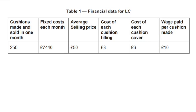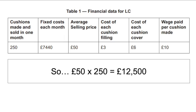In this scenario, we've got financial information for one month based on a company selling cushions. They sell 250 a month and the average selling price is £50. To work out that revenue, all we simply need to do is get our £50 selling price and times it by the output of 250, and we know in this month total revenue will be £12,500.